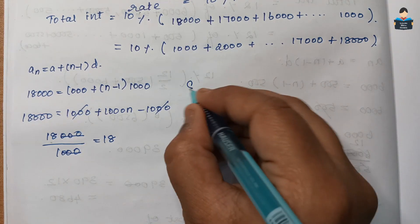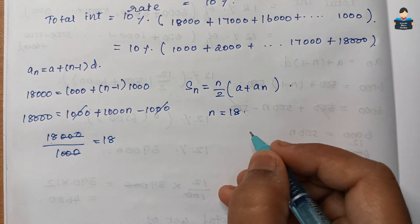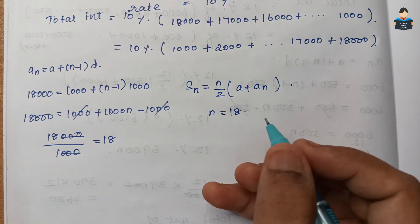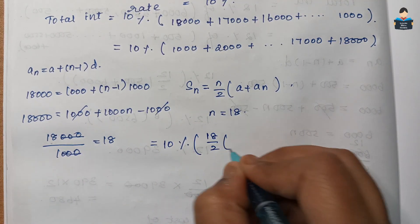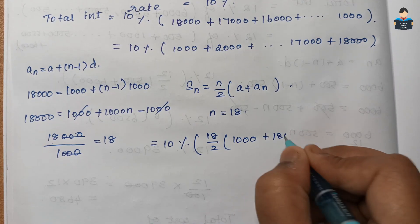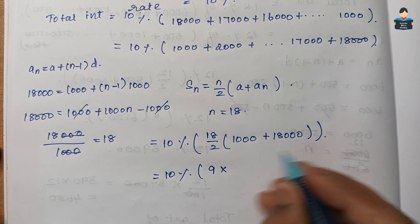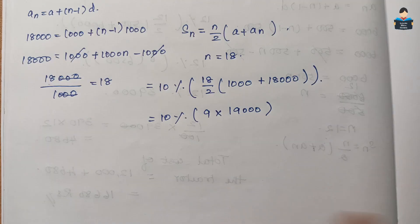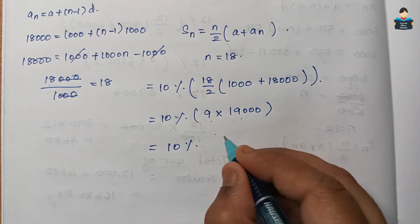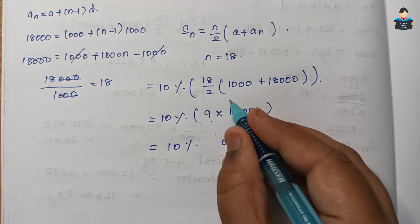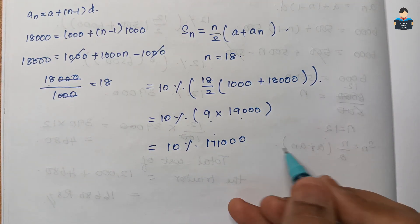Using Sₙ = n/2 × (a + aₙ): Sₙ = 18/2 × (1,000 + 18,000) = 9 × 19,000 = 1,71,000. Then 10% interest = 10/100 × 1,71,000 = 17,100. Total interest = rupees 17,100.